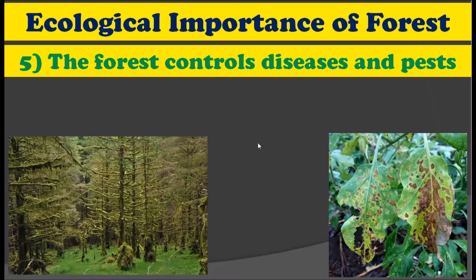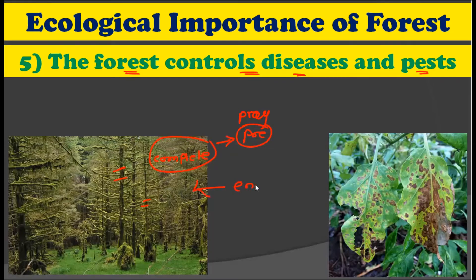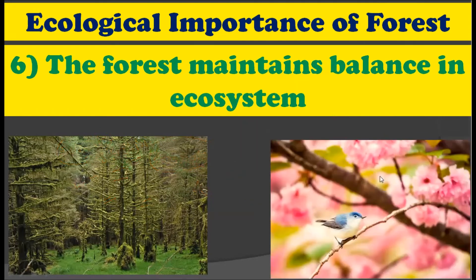The next ecological function of forest is pest control. The forest itself is a complete ecosystem. In this ecosystem, there are all the prey as well as the predators. Many diseases and pests are also present in the forest, but these pests also have their enemies in place. These enemies are constantly attacking the diseases and pests, and hence they control the pests from spreading into nearby areas.